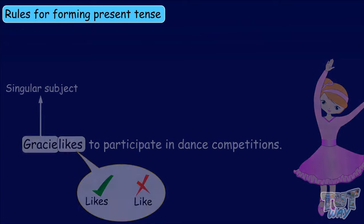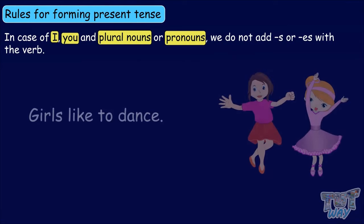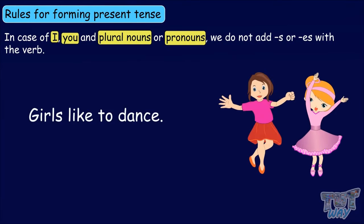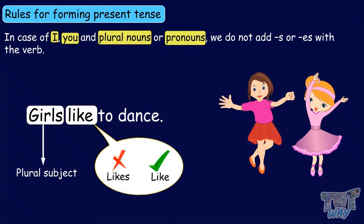In the case of 'I,' 'you,' and plural nouns or pronouns, we do not add 's' or 'es' to the verb. For example: 'Girls like to dance.' Here, the subject is 'Girls,' which is a plural naming word, so we have used 'like' and not 'likes.'